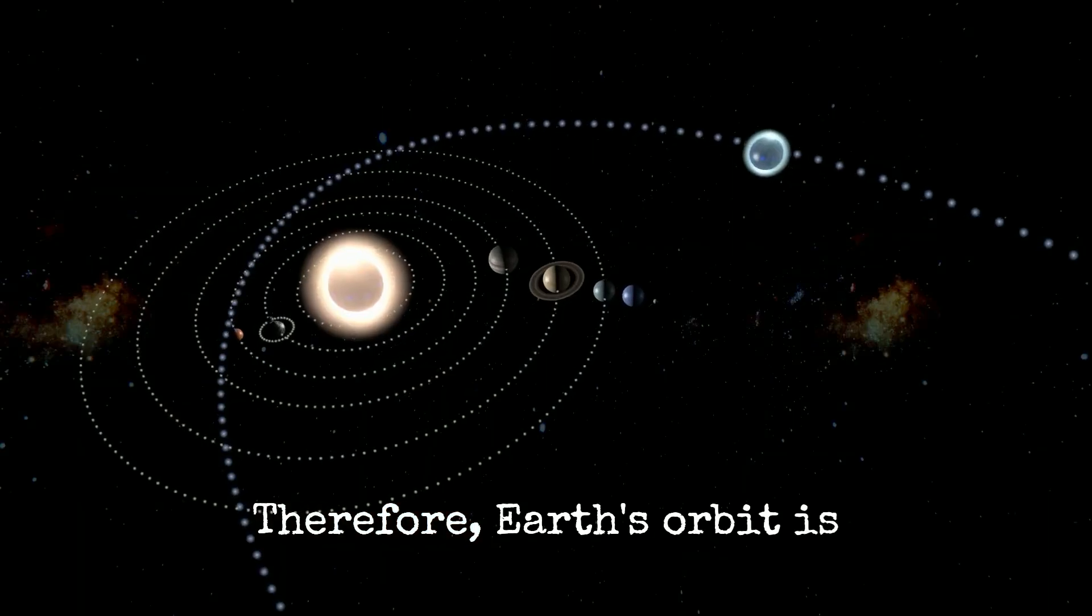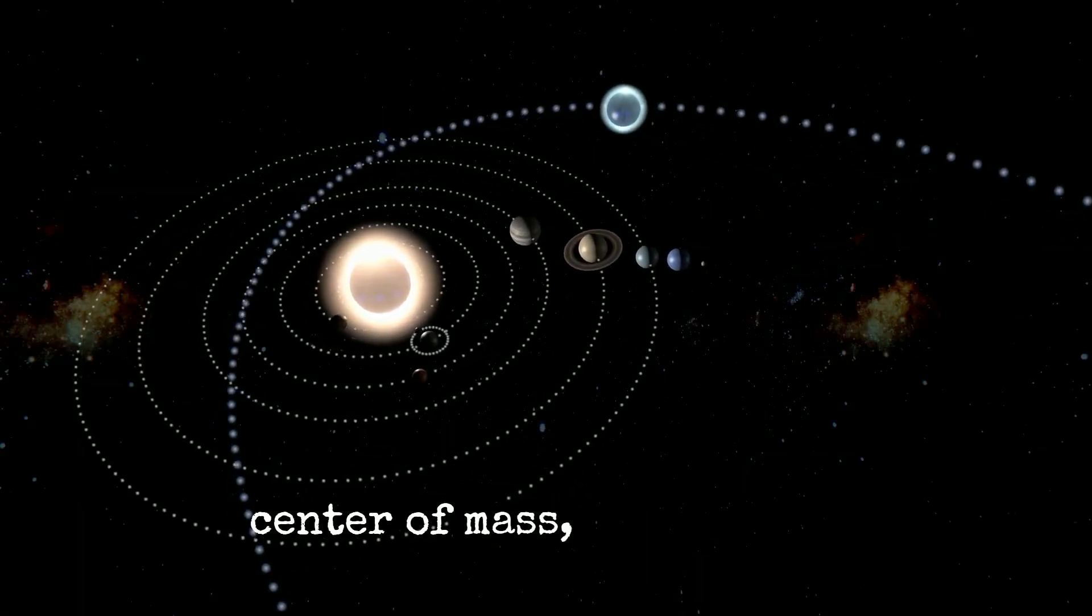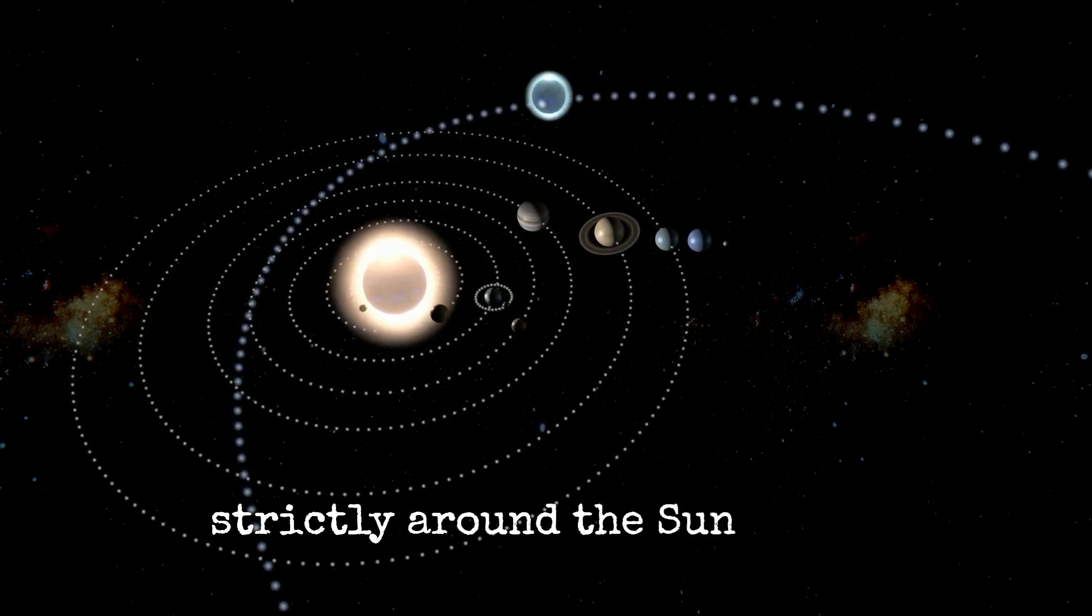Therefore, Earth's orbit is more accurately described as a path around this shared center of mass, rather than strictly around the Sun itself.